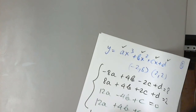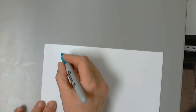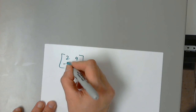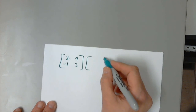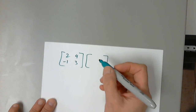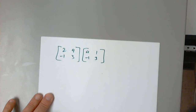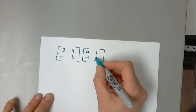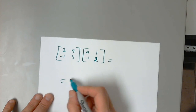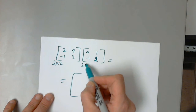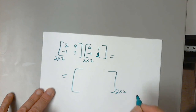Here's a 2 by 2 example. Matrix A is 2, 4, negative 1, 3. Multiplied by matrix B: 4, 1, negative 1, 2. The answer will be a 2 by 2 matrix. 2 times 4 is 8, plus 4 times negative 1 — 8 minus 4 is 4. 2 times 1 is 2, plus 4 times 2 is 8 — so 10. Negative 1 times 4 minus 3 is negative 7. Negative 1 plus 6 is 5. The result is 4, 10, negative 7, 5.